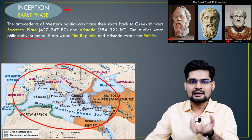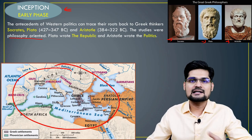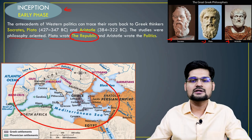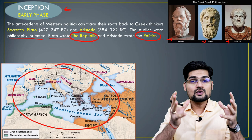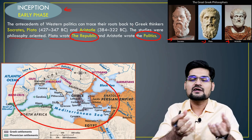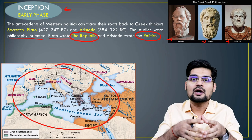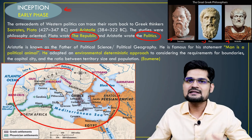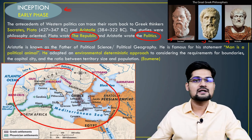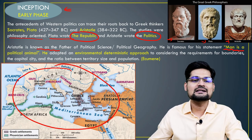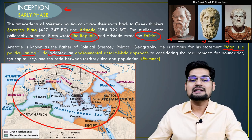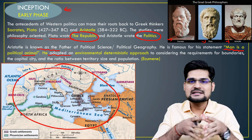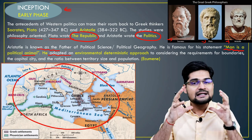Plato wrote the Republic and Aristotle's major work was Politics itself — two major works of the ancient world that paved the way for geographical and political thought. Aristotle is also called the father of political science and political geography. He is famous for his statement that 'man is a political animal' and also talked about the environmental determinism approach — the idea that nature and locations determine people and their cultures.